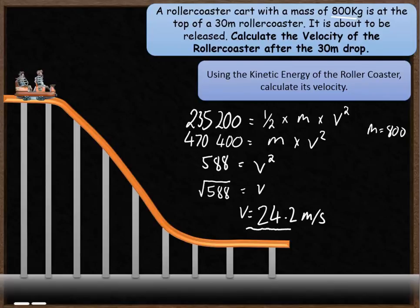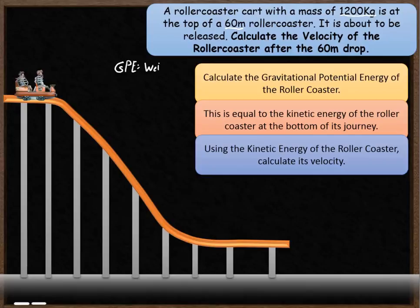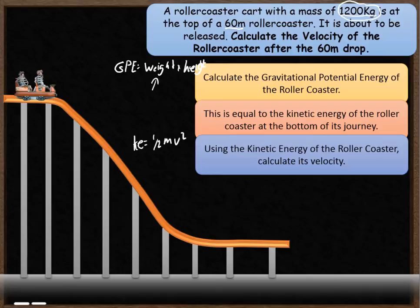There's another question coming up — listen to the question then pause the video. This time you've got a roller coaster cart with a mass of 1,200 kilograms at the top of a 60 meter roller coaster — a higher roller coaster and bigger mass. It's about to be released; calculate the velocity after the 60 meter drop. Remember the three steps: GPE is weight times height, weight is mass times 9.8, then rearrange the kinetic energy formula half mv squared to get velocity on its own.